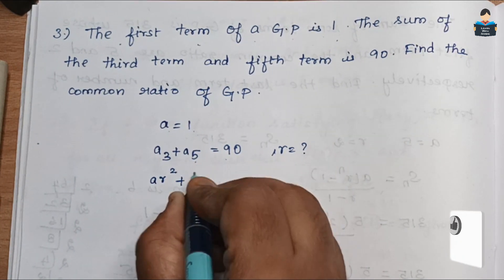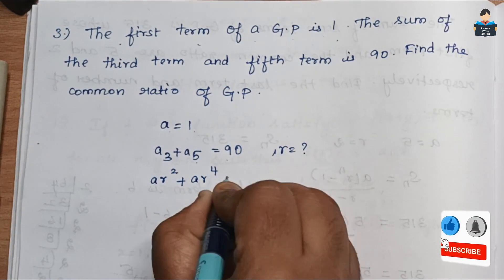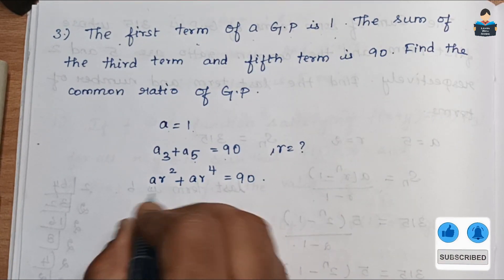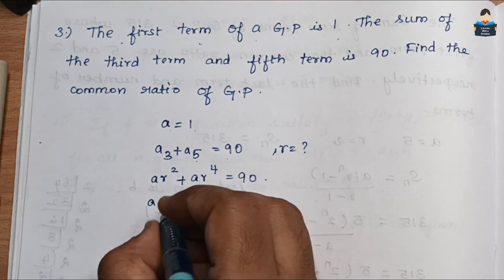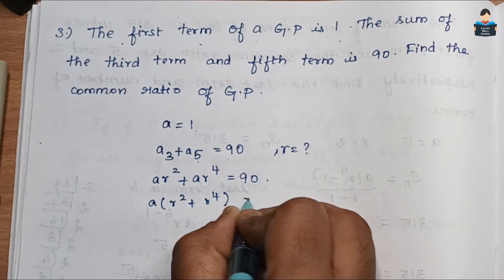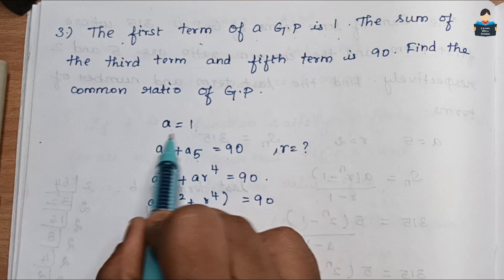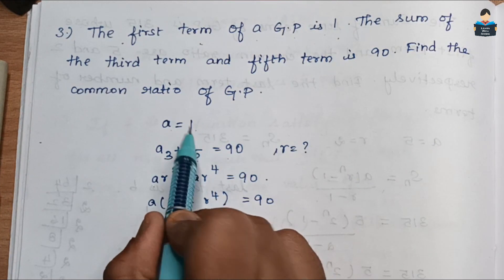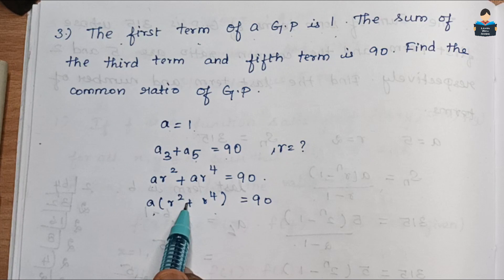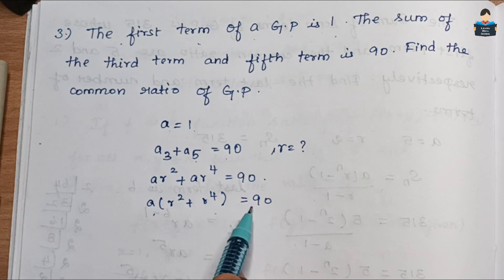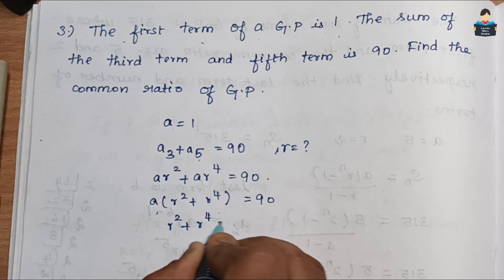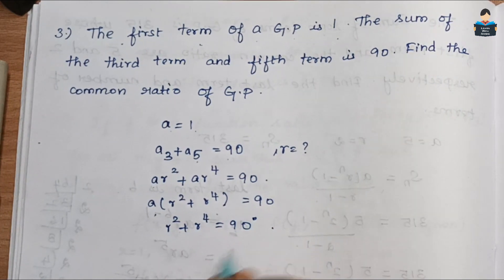So we write a·r² + a·r⁴ = 90. Since a = 1, substituting gives us 1·r² + r⁴ = 90, which simplifies to r² + r⁴ = 90.